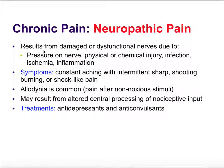Neuropathic pain results from damaged or dysfunctional nerves, which tend to send shooting pain signals. Causes include excess pressure on a nerve, physical injury, chemical injury, infection, ischemia, or inflammation. Symptoms include constant aching pain, intermittent sharp pain, shooting or burning sensations, and allodynia — which is very common with neuropathic pain, where just touching an area with an injured nerve sends pain signals. Treatments include antidepressants to address associated depression, and anticonvulsants to calm down injured nerves.